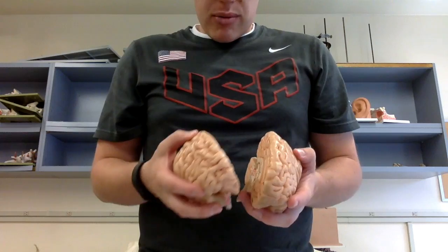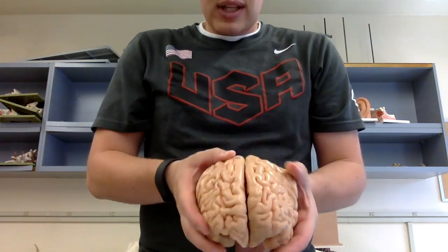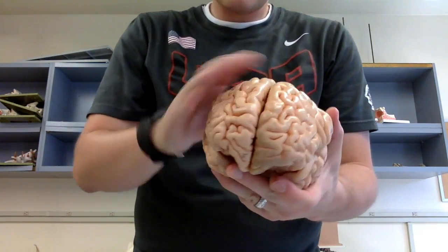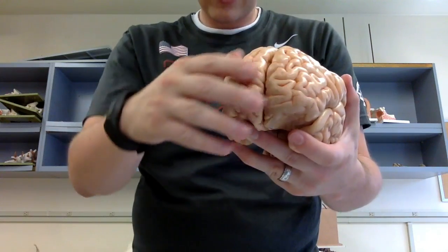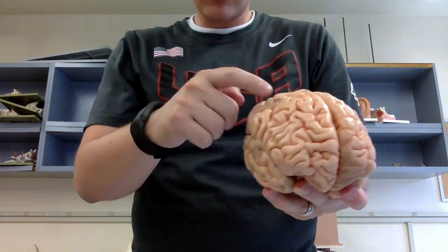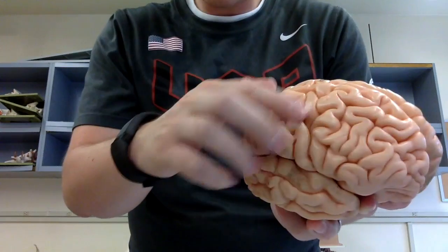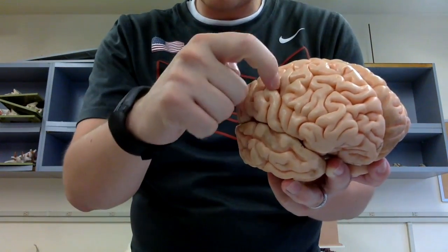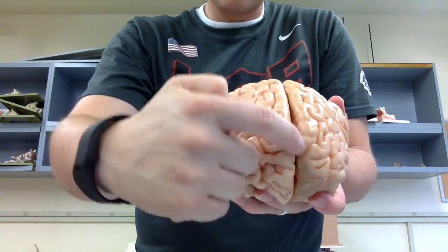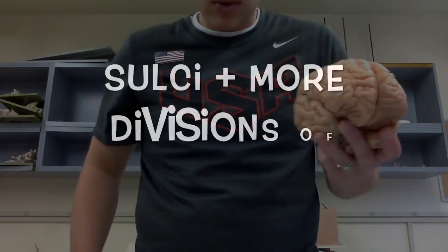Next we have the cerebral cortex, which is really just the outer layer of the cerebrum. The gyri are all these ridges coming up, and all the little grooves in between them are the sulci. Fissures include specific ones such as the longitudinal fissure running directly down the middle.